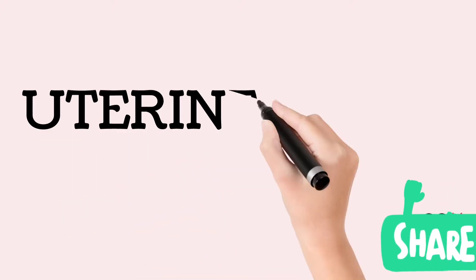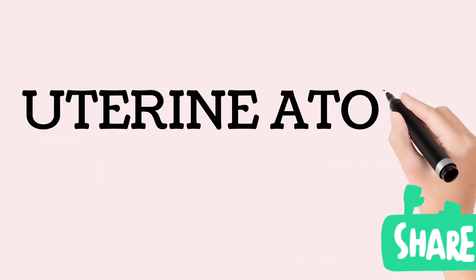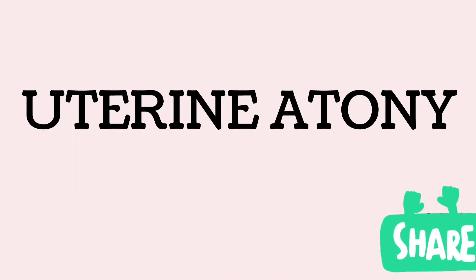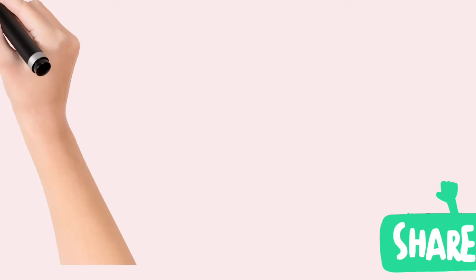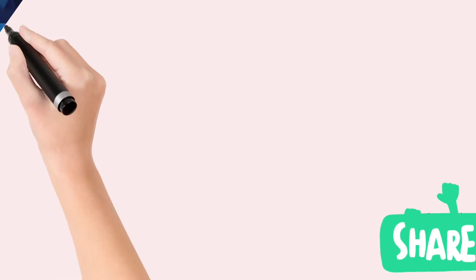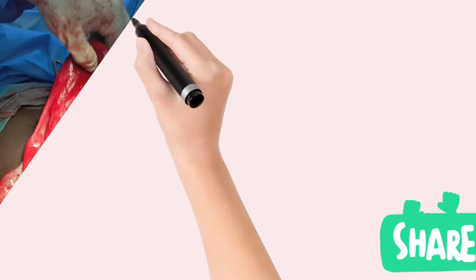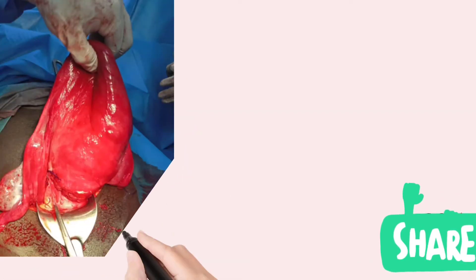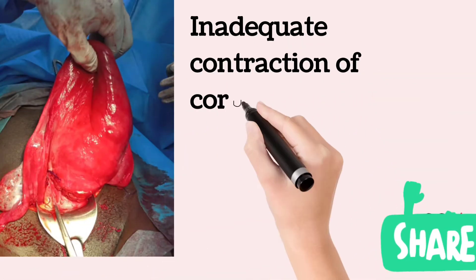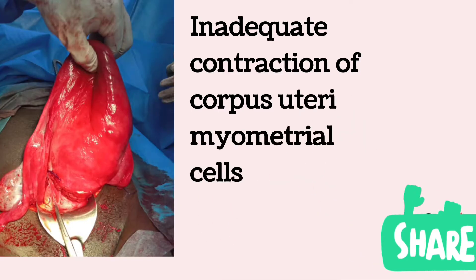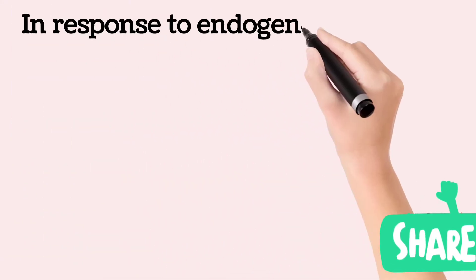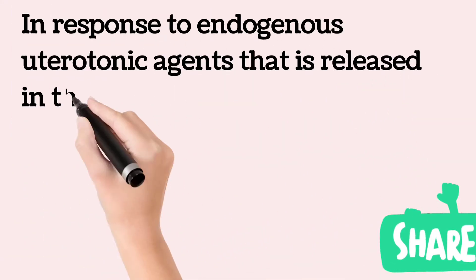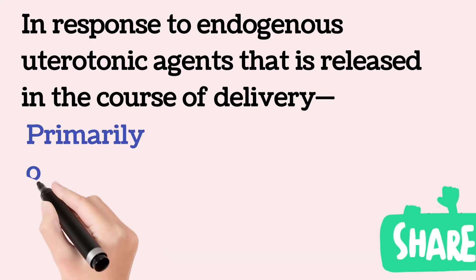Uterine atony refers to the inadequate contraction of myometrial cells in response to endogenous uterotonic agents that are released in the course of delivery.